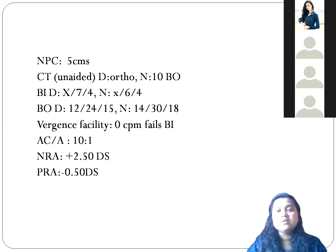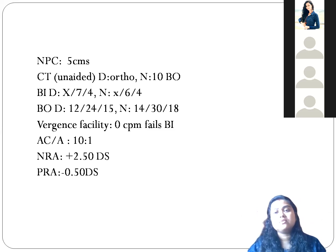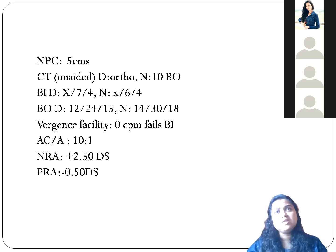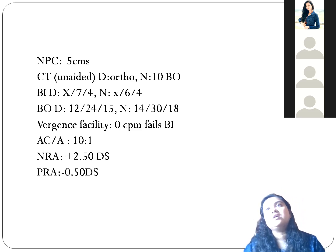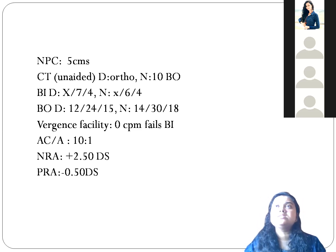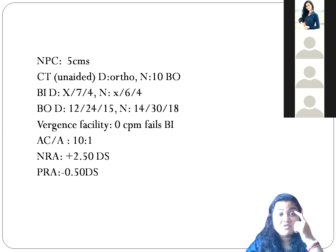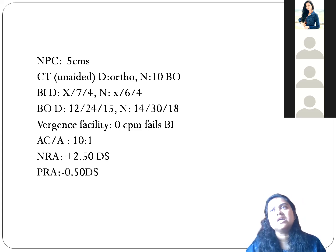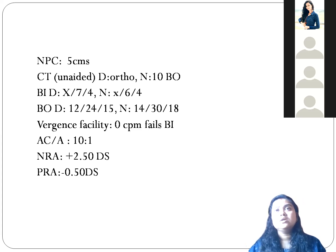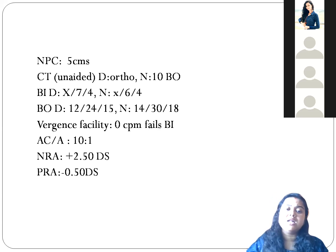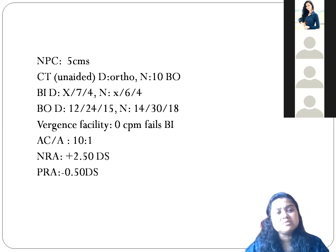Meanwhile, in-office therapy is also needed. We can start Brock string therapy along with the plus lenses to relax the excess convergence at near, since the negative fusional vergence at near is very less. We can also give life saver card exercises — using that transparent sheet shown in the previous class — to improve divergence. So the treatment plan includes plus lenses, Brock string, and life saver card exercises.